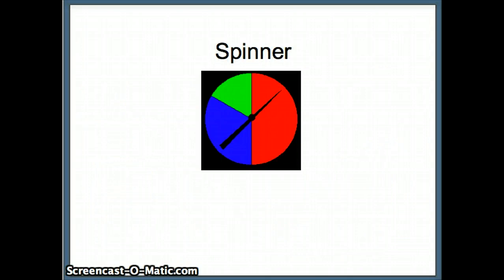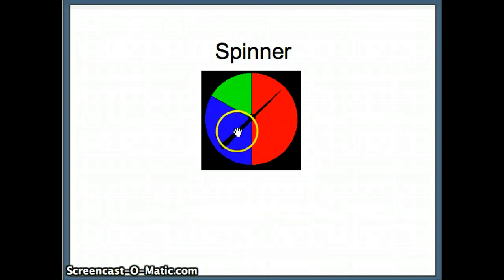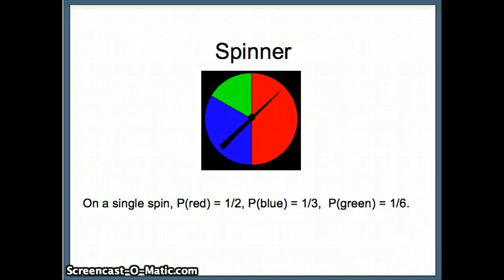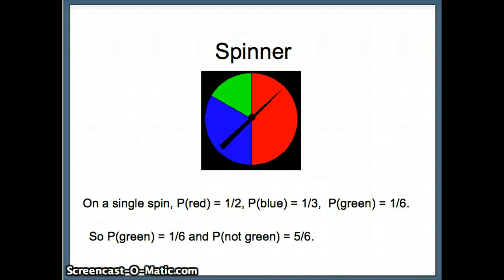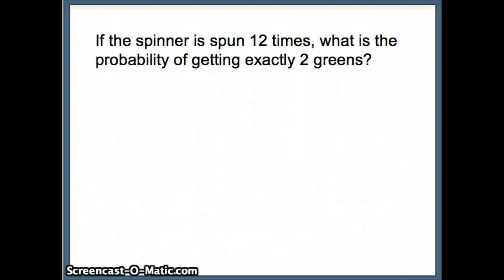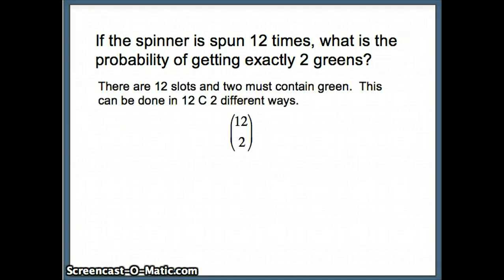Here's a spinner problem. Red is taking up half the space, blue is taking up a third of the space, and green is taking up a sixth of the space. So probability of red is 1/2, blue is 1/3, green is 1/6. The probability of not getting green is 5/6. With binomials we need the probability of success and failure. If the spinner is spun 12 times, what is the probability of getting exactly two greens?